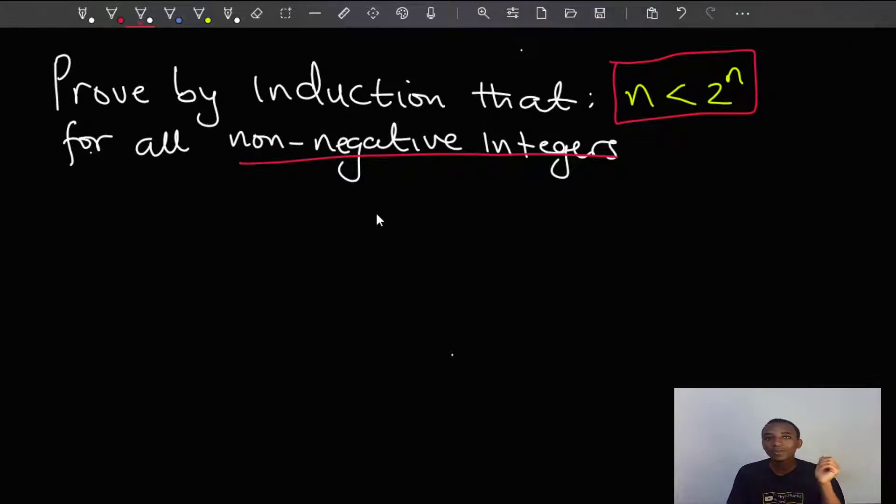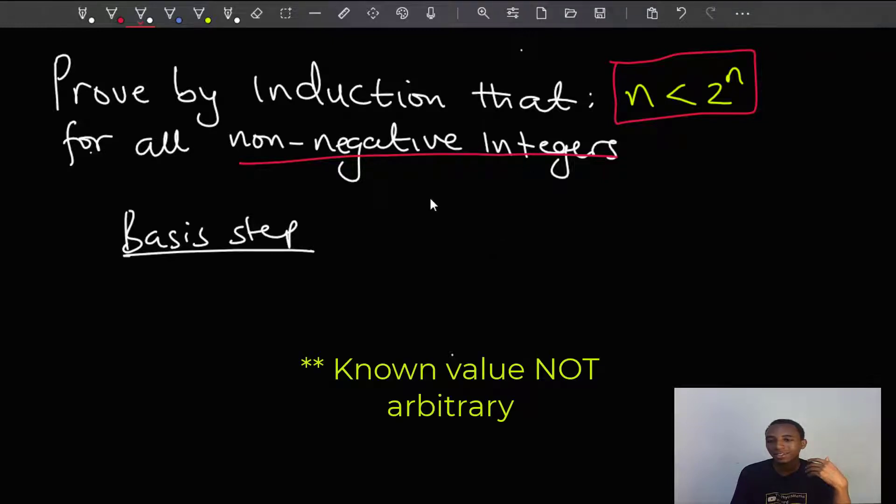As with all problems of proof by induction, we'll begin with the basis step. So the basis step, where we have to prove that this proposition is true for some arbitrary value that is in the range, so let's just use n equals to 1, for example.